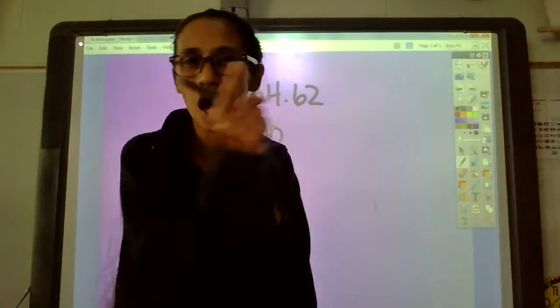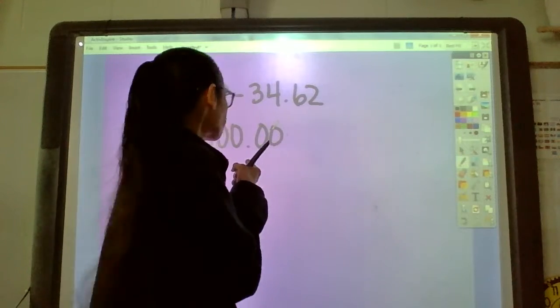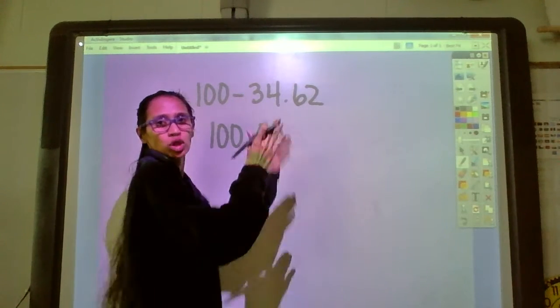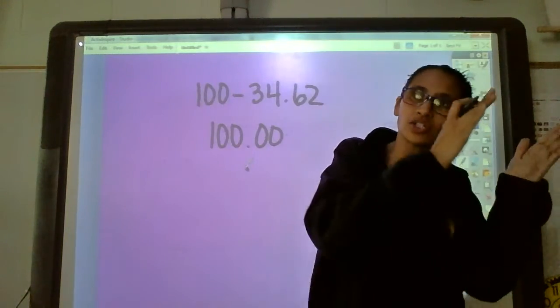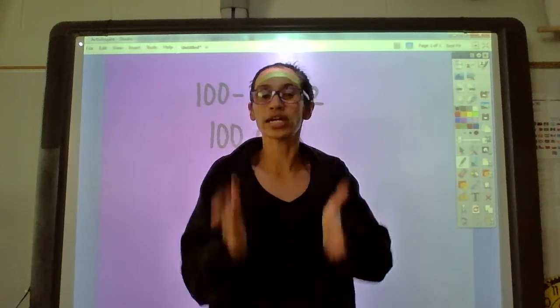You ready to subtract this one? Remember decimals do what? They line up straight. Make sure your stuff is not going sideways like this or sideways like that or your problem will be wrong. Make sure it's straight up and down. 34.62.